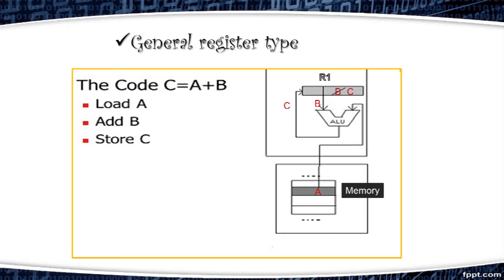Each address field may specify a CPU register or a memory word. For example, add R1 and Y. This instruction means add two numbers, one in register instead of accumulator and another at some memory location.